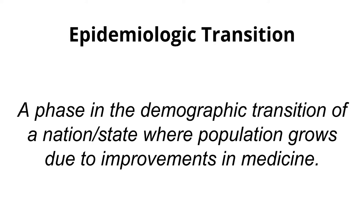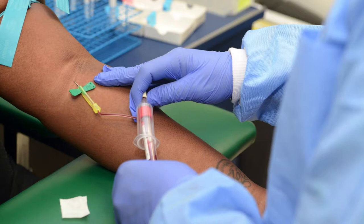The epidemiologic transition is similar to the demographic transition model, but in this one you get to know why a population grows — and that's basically because of improvements in medicine. Things like vaccinations have made people's lives longer and have also guaranteed that babies that are born are actually going to survive.